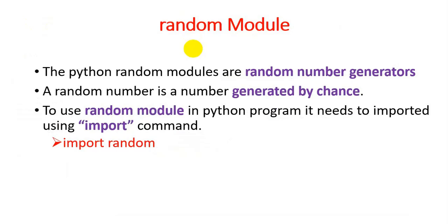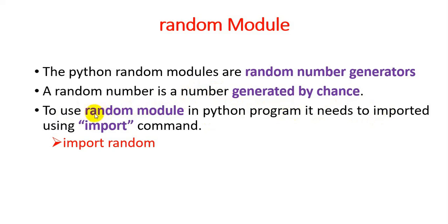Hello friends, we are going to discuss the random module in Python. The Python random module provides random number generators. A random number is a number that is generated by chance, that is generated randomly. To use the random module in a Python program, it needs to be imported using the import command. You have to use 'import random' to import the random module.